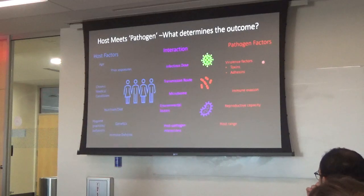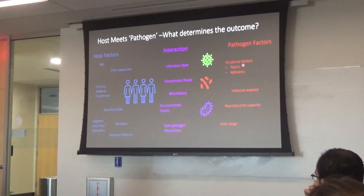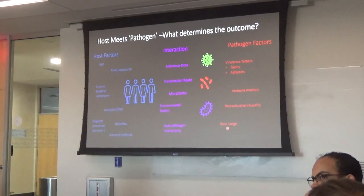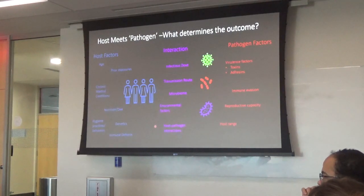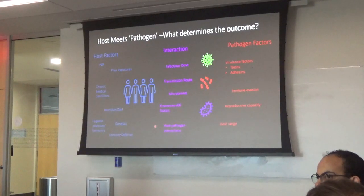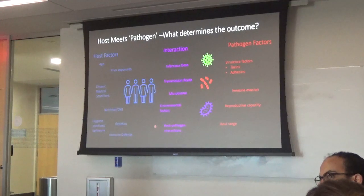There are also many pathogen factors. These pathogens are well adapted through evolution to infect certain parts of the body — they have adhesins to stick to different surfaces, toxins, and ways to evade the immune system. Host range is important too; the avian flu that occasionally jumps to humans is a host range issue. And reproductive capacity matters — can they get into a niche and replicate before the immune system clears them? Some bacteria like Salmonella and Shigella need very few organisms to cause illness, and the route of transmission makes a big difference in the outcome.